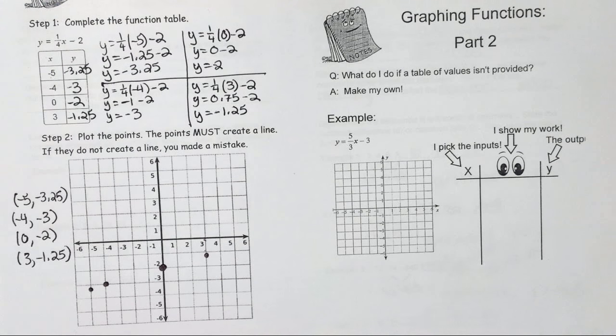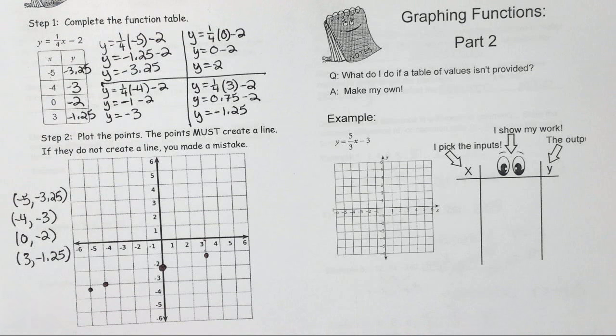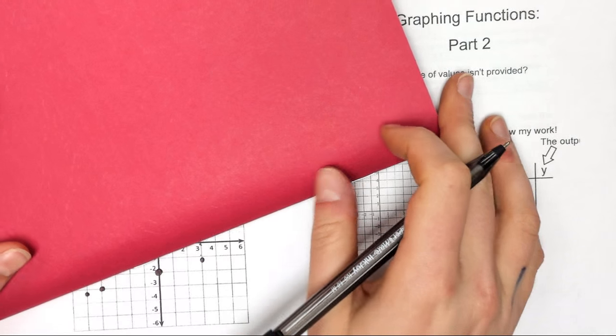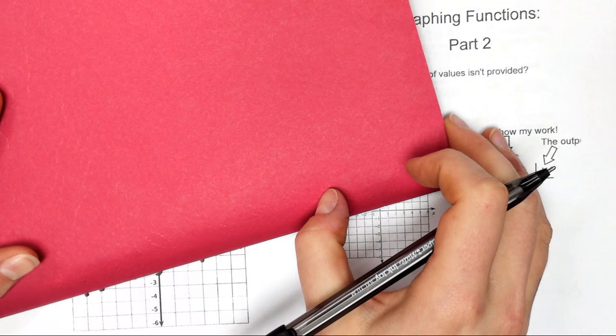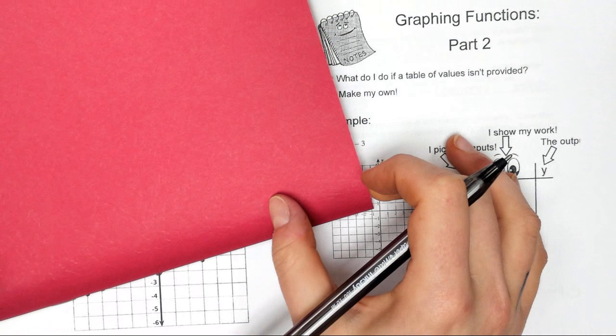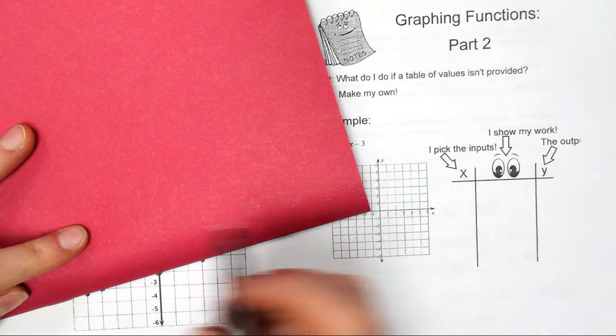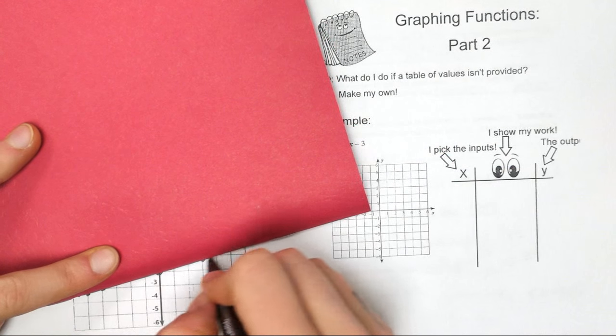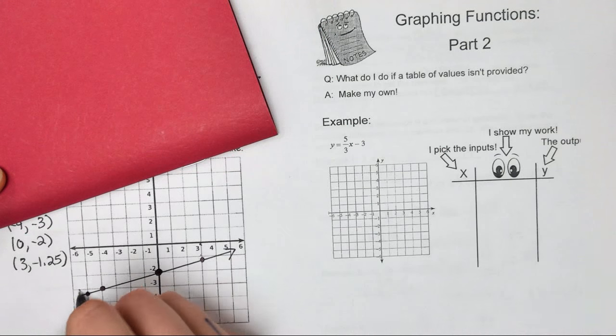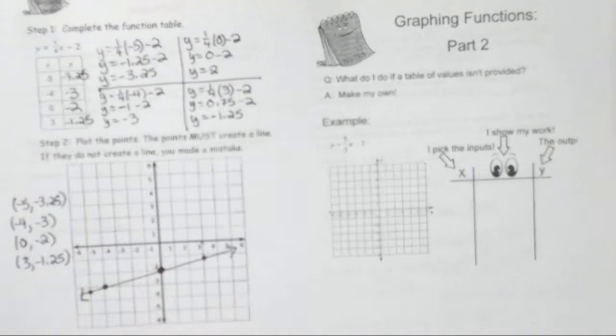After you've plotted your points, you want to take some sort of straight edge—your corner of your agenda, corner of a clipboard, corner of a folder, something like that. We line it up along our points. It's not going to be exactly a straight line, but as long as it's pretty close. Connect them together, and there's the graph of your function.